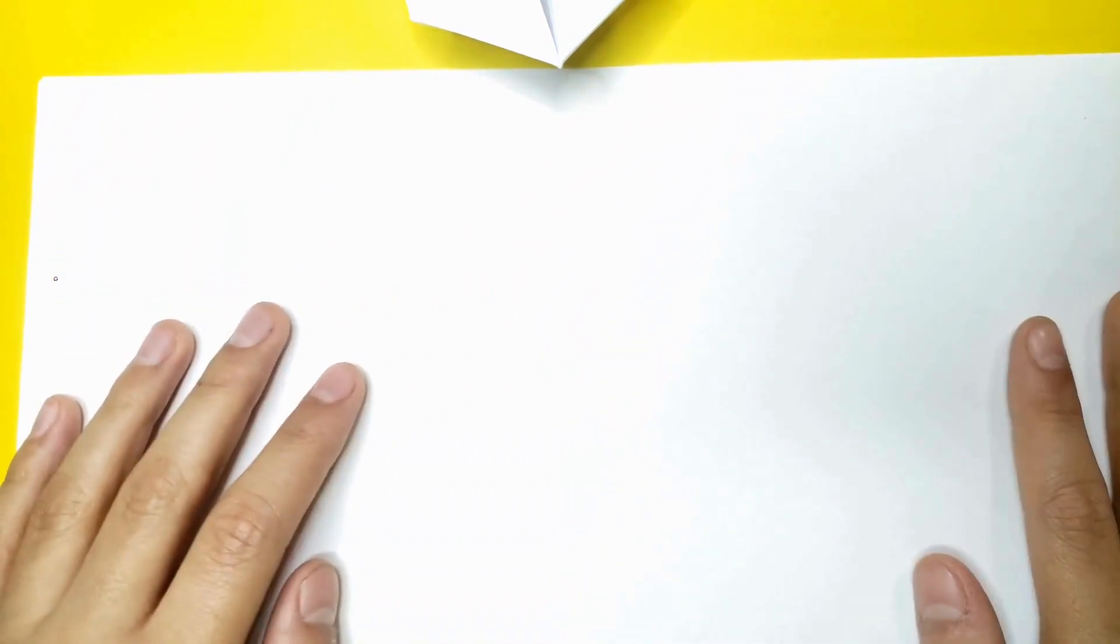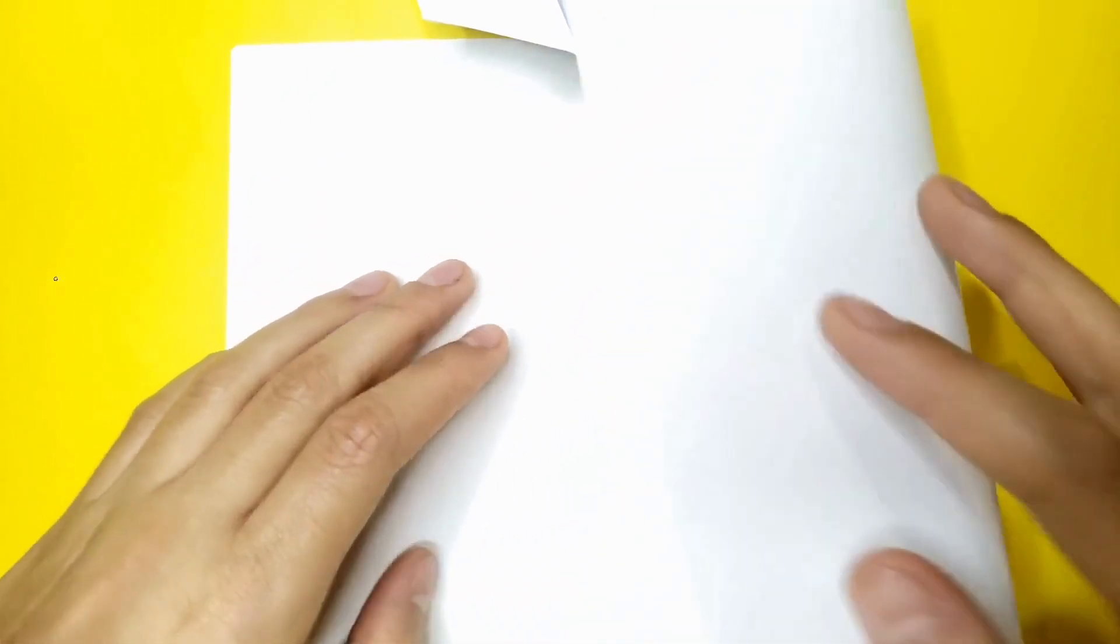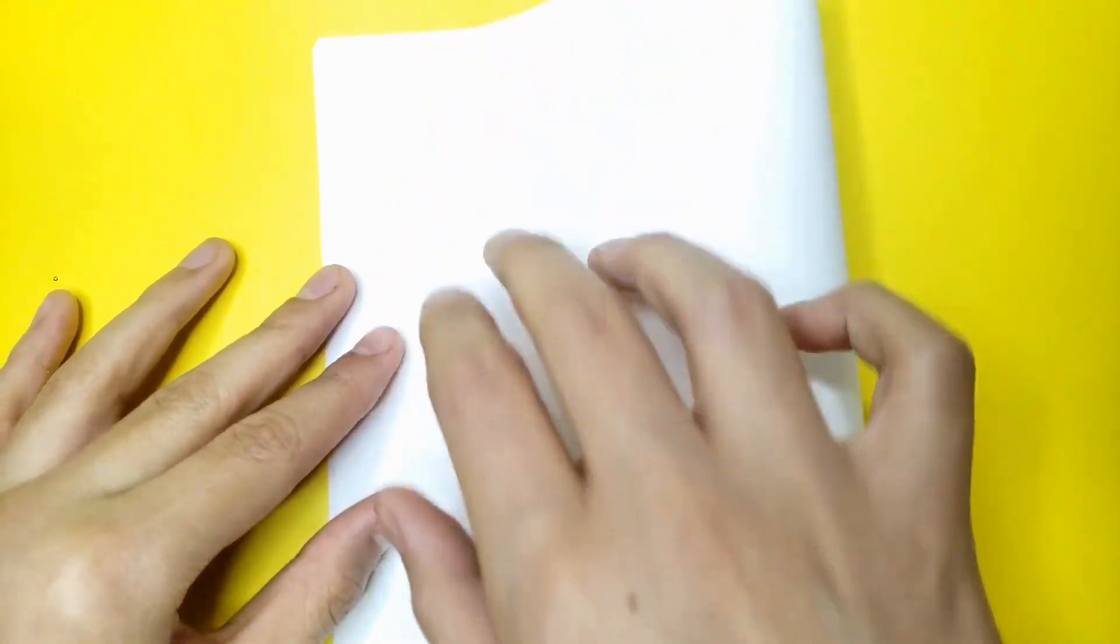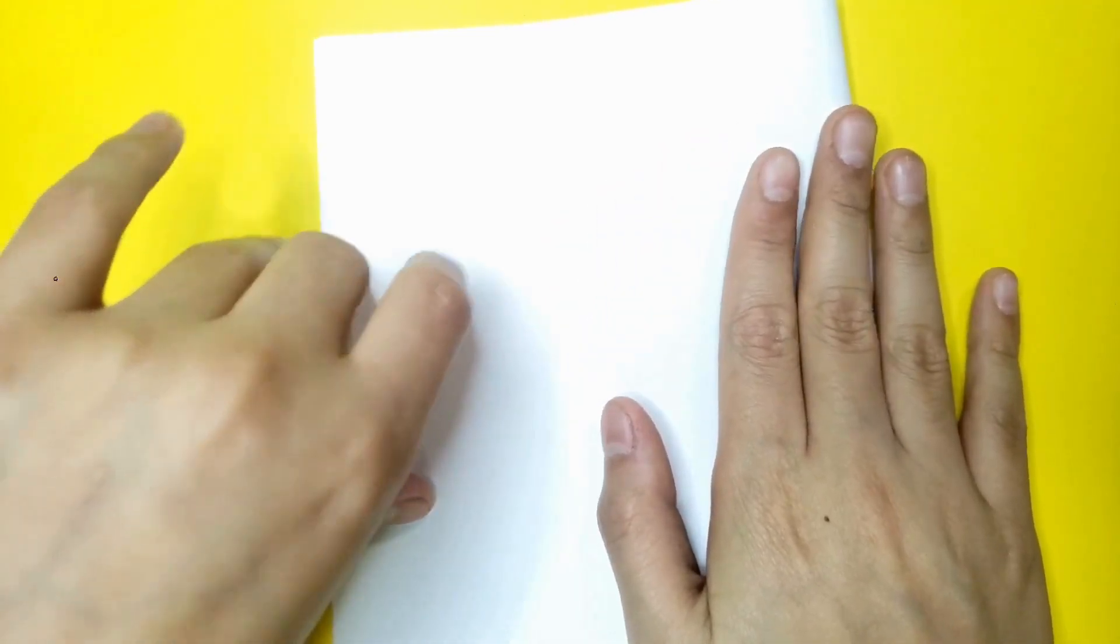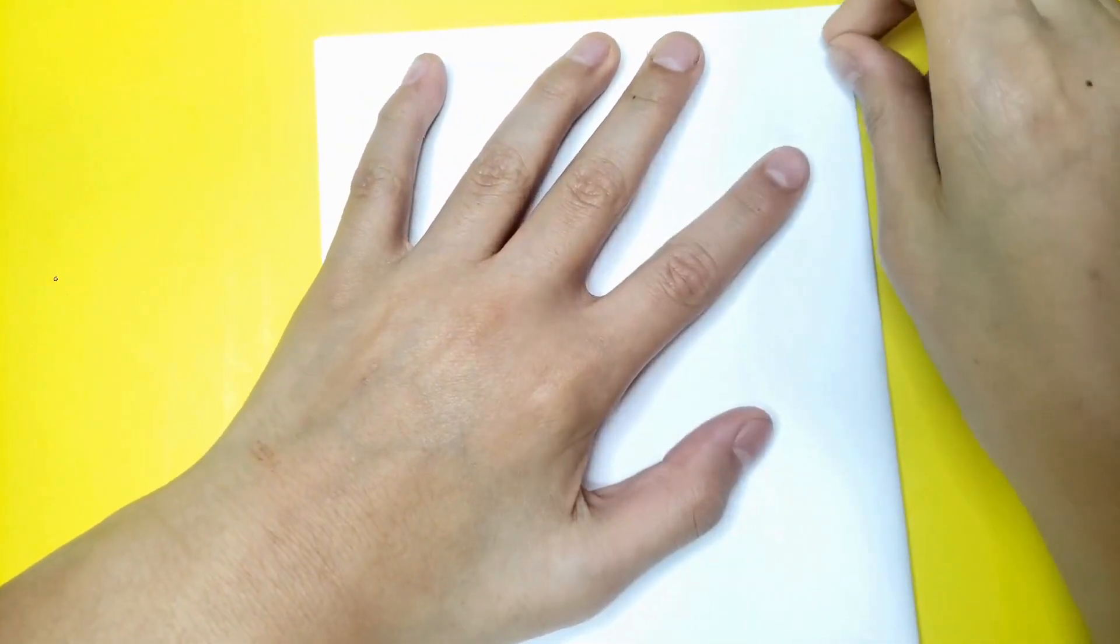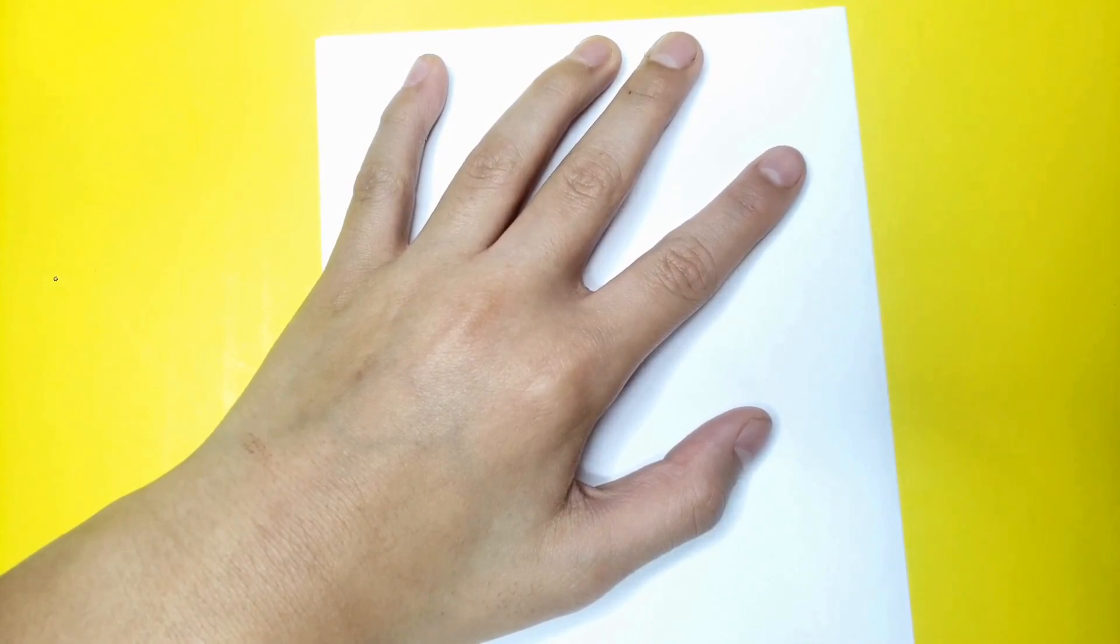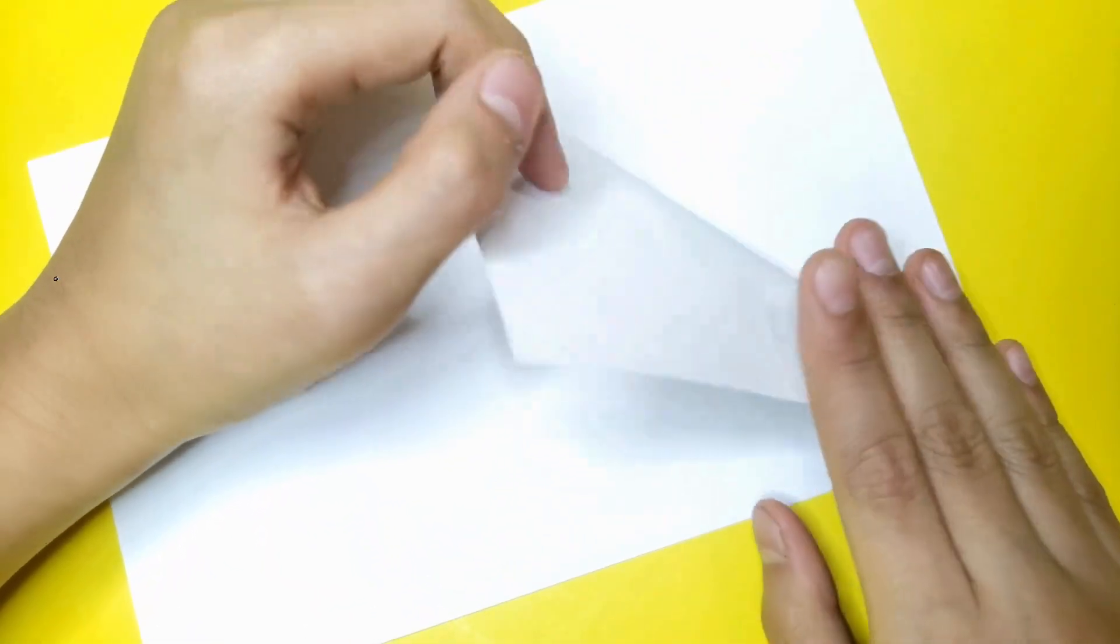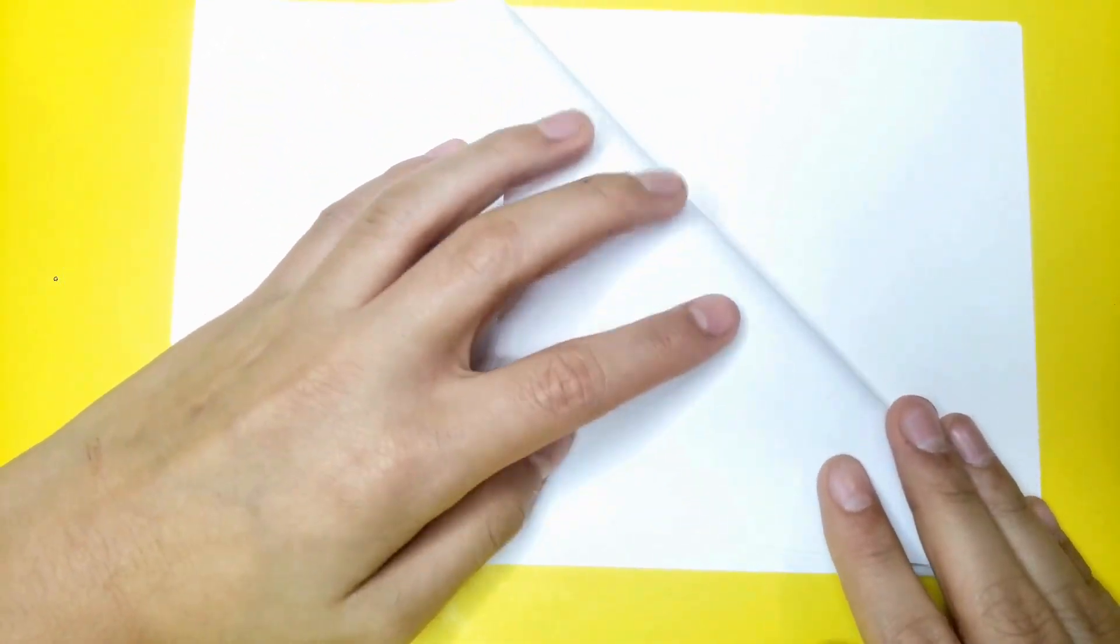You're going to need a rectangle sheet of paper, and you're going to fold it in half. Now you're going to fold it like an airplane.